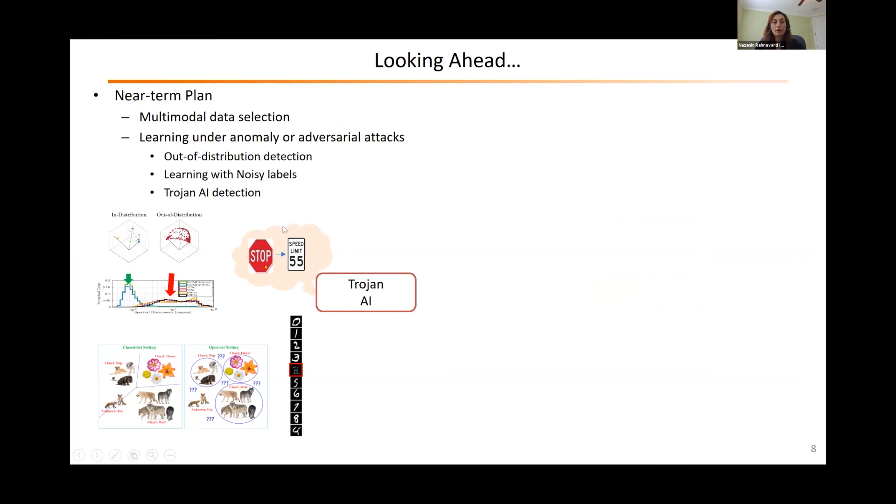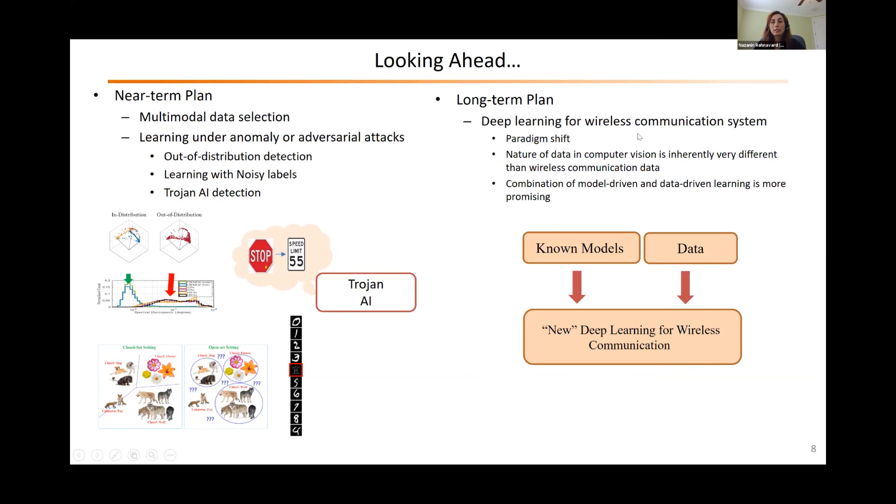Let's say if you have noisy labels, if you have a Trojan AI that the adversary has changed a stop sign to a speed limit in the labels, that can make a catastrophe for, let's say, self-driving cars. We are looking at those kinds of practical and adversarial issues in AI.